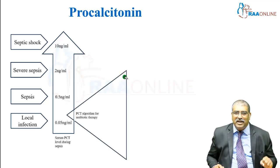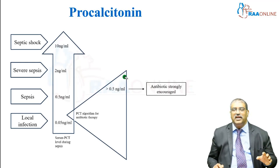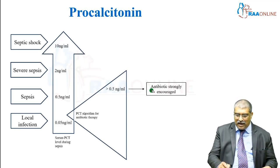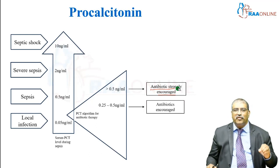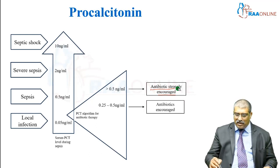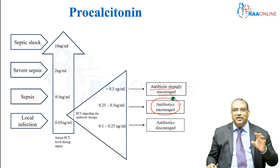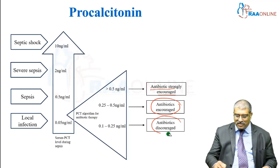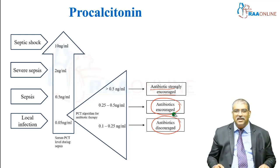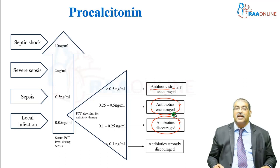With regard to the antibiotic algorithm based on procalcitonin: if it is greater than 0.5 nanogram per ml, antibiotics are strongly encouraged. If it is between 0.25 to 0.5 nanogram per ml, antibiotics can be encouraged. If it is between 0.1 to 0.25 nanogram per ml, antibiotics are usually discouraged. And if it is less than 0.1 nanogram per ml, antibiotics are strongly discouraged.